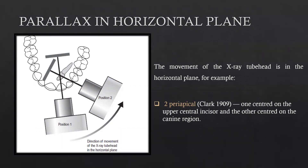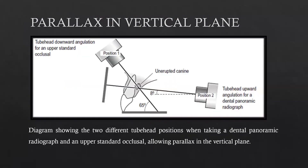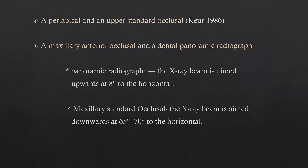Similarly, when we move the tube head in a vertical direction we get parallax in the vertical plane. For example, when taking a panoramic radiograph the tube head is directed upwards, and when taking a maxillary occlusal radiograph the PID is directed downwards. Parallax in the vertical plane can also be obtained by combining a periapical radiograph with an upper standard occlusal, or by combining a maxillary anterior occlusal with a panoramic radiograph.